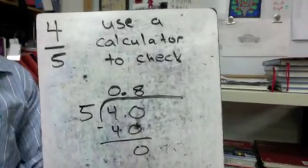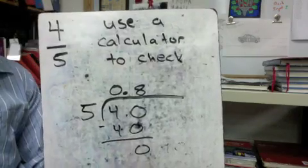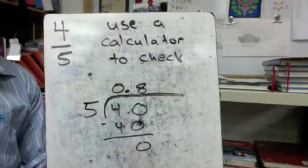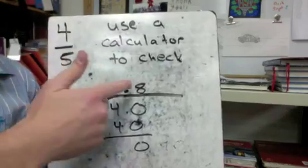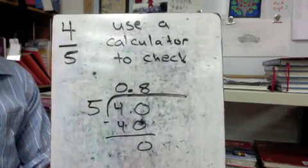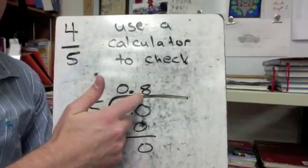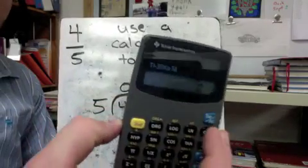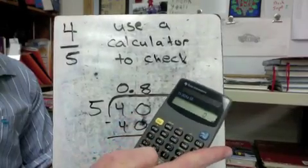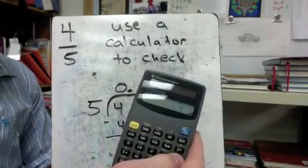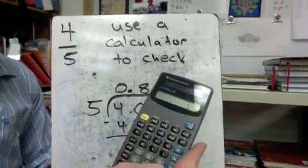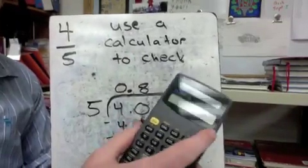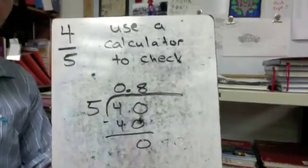The last thing I'll leave you with before you do the practice problems: you can use a calculator to check — I'm fine with that. Just make sure that if you're wrong, you go back and fix your work. For example, 4 divided by 5 is exactly what you'd punch into the calculator. I did the problem and got 0.8, or 8 tenths — a terminating decimal, it stops. On a calculator, if I do 4 divided by 5 equals, I get the same thing: 0.8. So use the calculator to check — it's fine. But if you're wrong, just make sure you go back and fix your work.